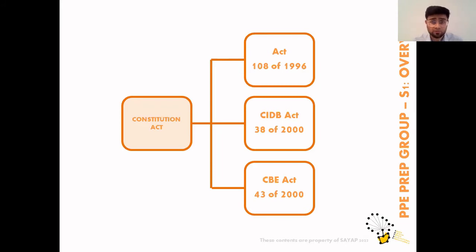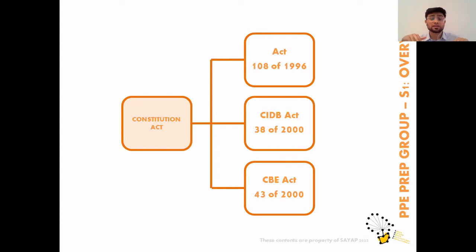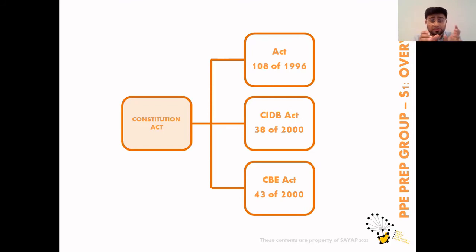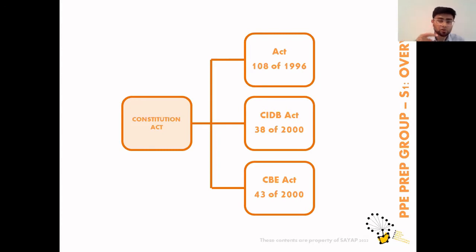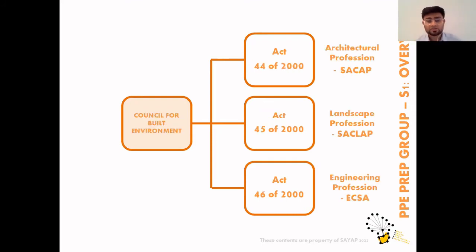The Council for the Built Environment — Act Number 43 of 2000 — was established to regulate all construction industry professionals. To summarize: the Constitutional Act 108 of 1996 gave birth to the CIDB Act 38 of 2000, which gave birth to the CBE — Council for the Built Environment Act 43 of 2000. Look at the numbers — they follow a sequence. In the year 2000, Act 38 followed through until Act 43, which gave birth to all of the acts in the next slide.